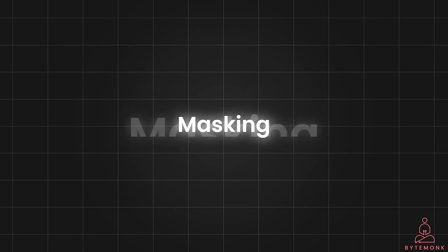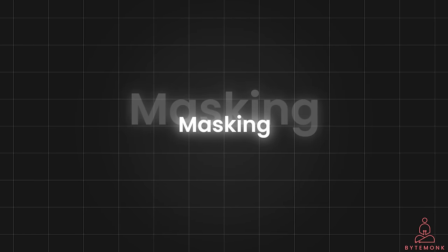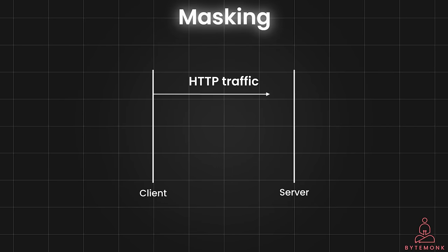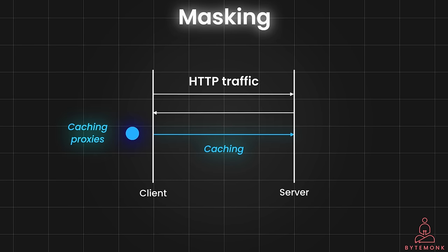Coming back to masking — masking's main goal in WebSocket is to ensure smooth transmission of real-time data through various network infrastructure that wasn't necessarily designed with WebSockets in mind. Before WebSockets were standardized, some network infrastructure components, particularly those designed purely for HTTP traffic, tried to be smart when it came to caching. These caching proxies sometimes stored responses from a server, expecting that they could later reuse the same response for similar HTTP requests.